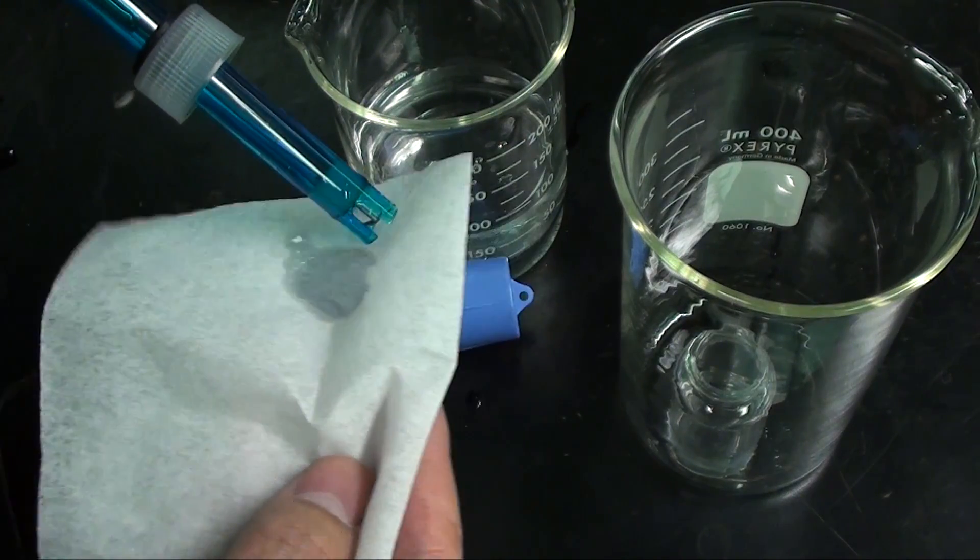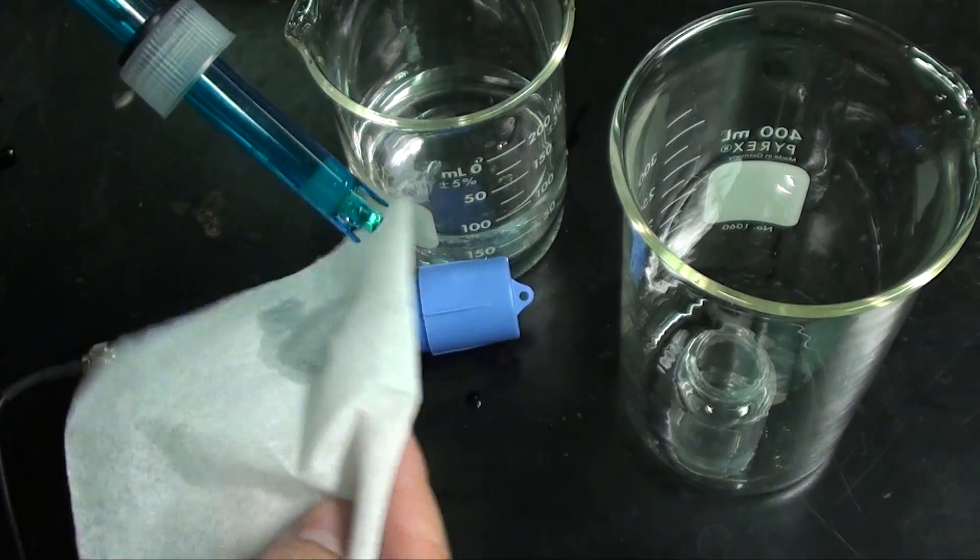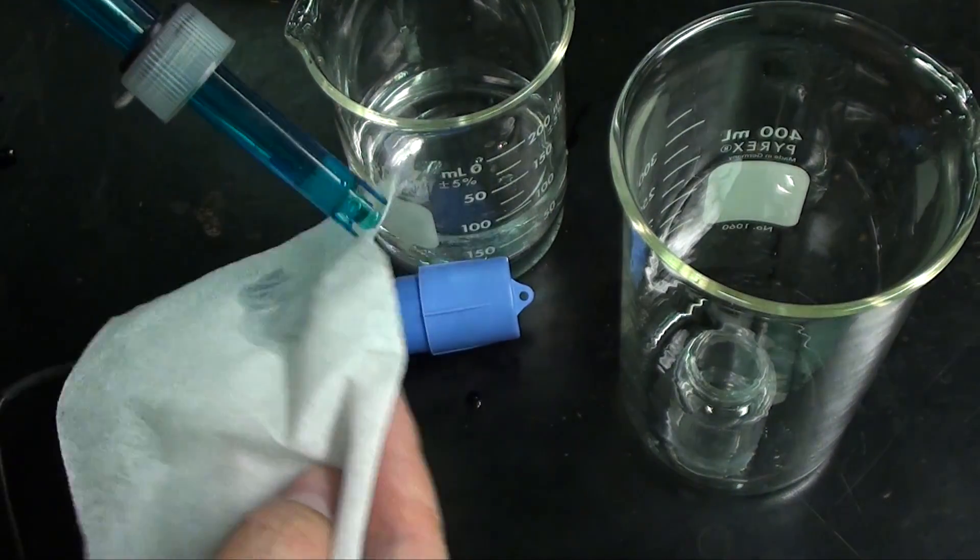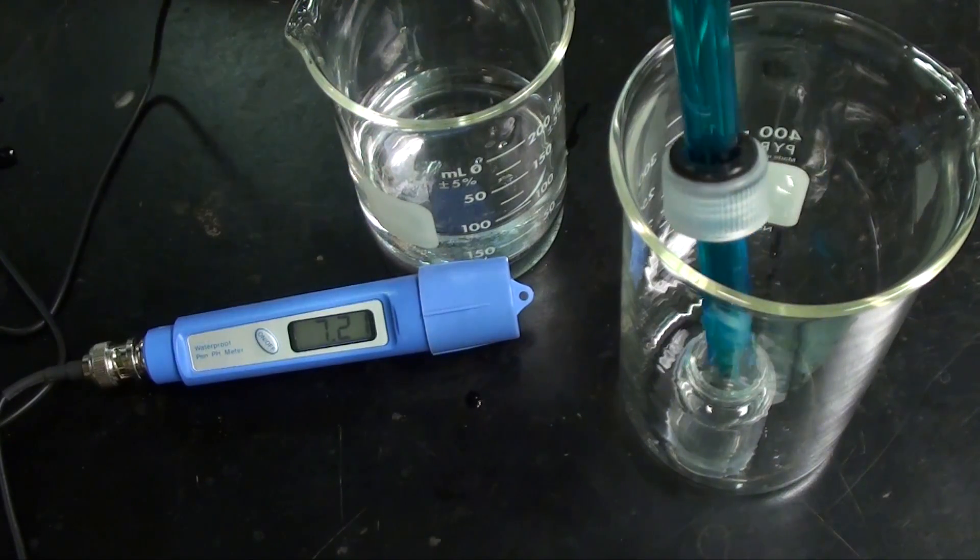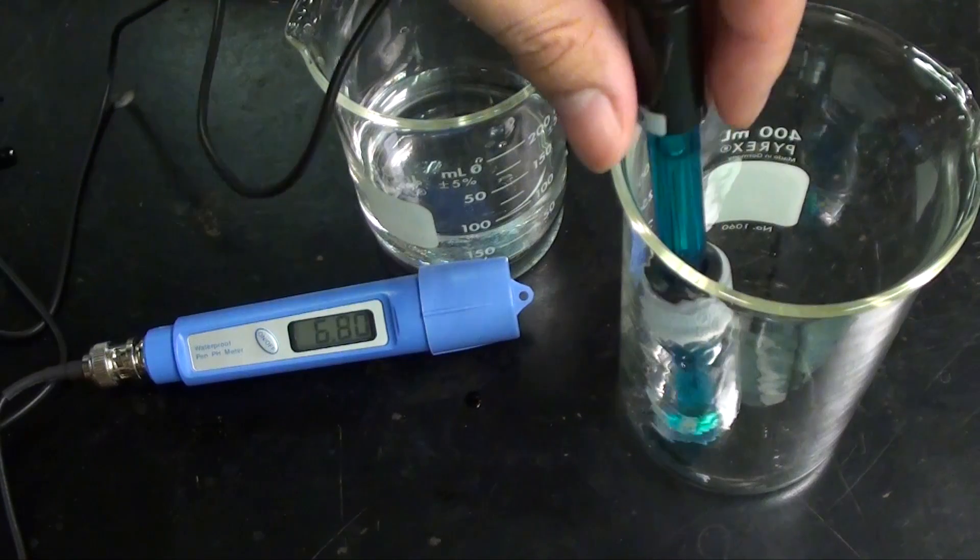Now I'm dabbing off the excess water. Be careful not to touch the glass bulb itself, you don't want to contaminate or scratch the bulb. Now simply insert the electrode into the calibration solution and give it a few minutes to equilibrate.